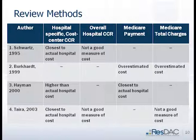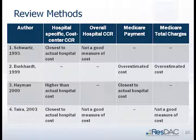Burkhart looked at Medicare payment and total charges; in both cases, they overestimated cost compared to the provider's actual cost. Hayman's article compared cost center level to Medicare payment, and Medicare payment came closest to the provider's actual cost. Tiara looked at cost center level, overall hospital, and total charges, and in that article the cost center level came the closest. The moral of the story is that there is not one method that everybody can agree on as closest to the provider's actual cost.